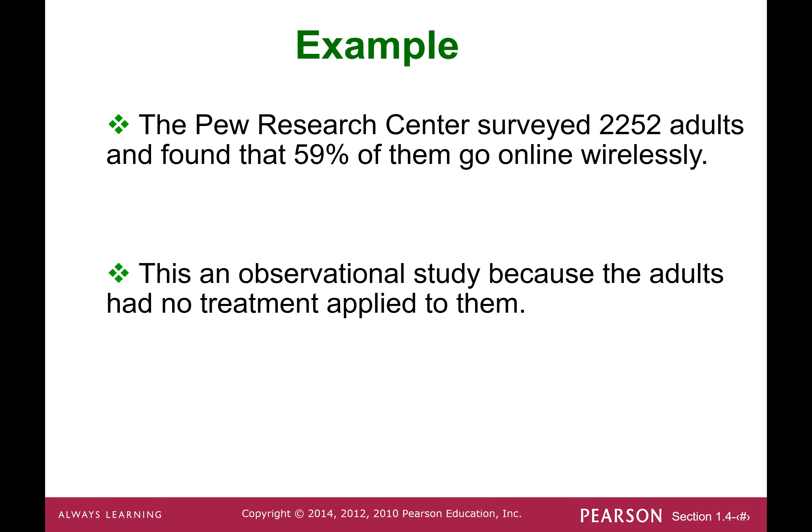For example, the Pew Research Center surveyed 2,252 adults and found that 59% of them go online wirelessly. In this particular research study, the researchers did not apply any treatment to the subjects, so this is a typical observational study — they just collect and observe data from subjects without modifying anything.